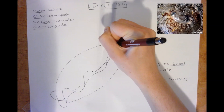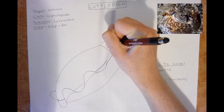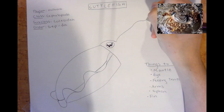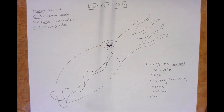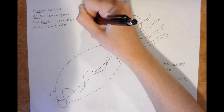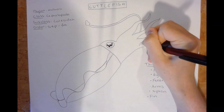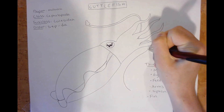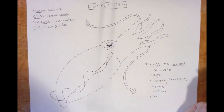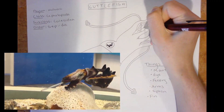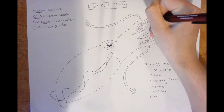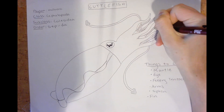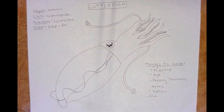The cuttlefish has a large camera-like eye with a distinctive W-shaped pupil. As we draw the arms and tentacles, we need to remember that cuttlefish have eight arms and two tentacles. The tentacles have club-like ends which they use to quickly grasp prey and then manipulate it with their arms. Unlike the feeding tentacles, which only have suckers on the ends, cuttlefish have rows of suckers along the length of their arms.